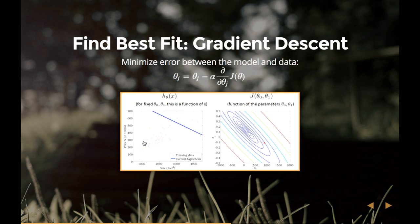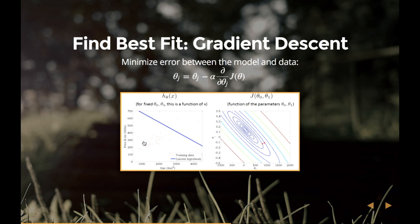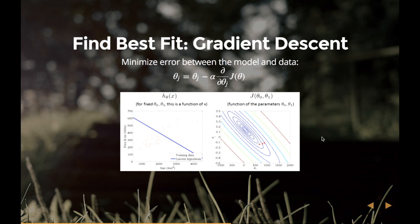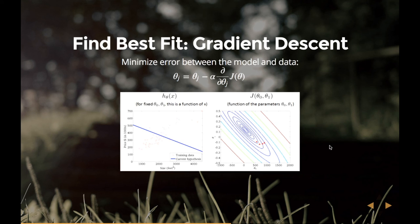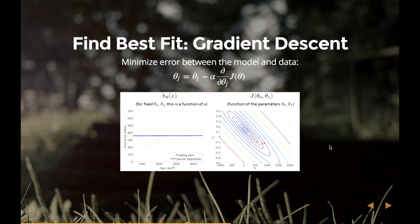This is the gist of supervised learning: you have an error function you want to minimize. Error functions can be very complex — like guessing what's in an image. But the core idea is your training data and hypothesis keep getting more accurate, and eventually you find good approximations for the thetas — the weights — the parameters to your function. Neural networks have tens of millions of parameters to fill out, so these things can get really complex.